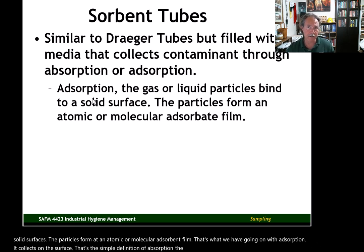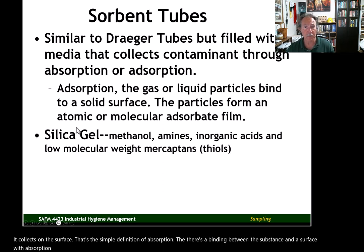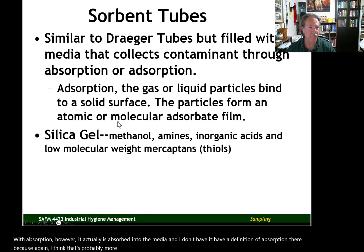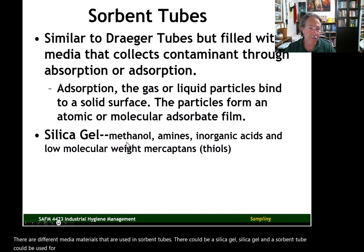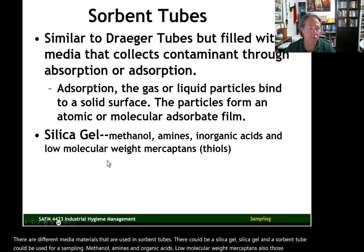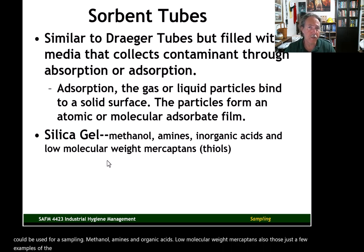There's a binding between the substance and a surface. With absorption, however, it actually is absorbed into the media — that's probably a more familiar concept. There are different media materials used in sorbent tubes. Silica gel, for example, can be used for sampling methanol, amines, inorganic acids, low molecular weight mercaptans — just a few examples.